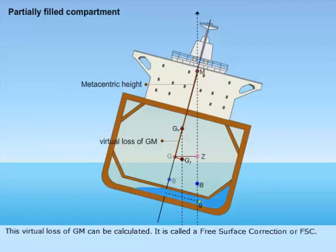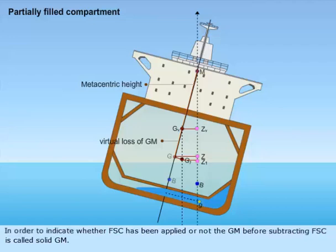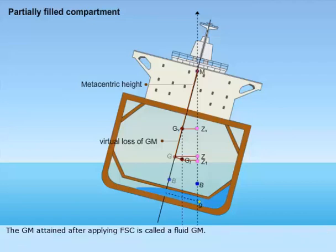This virtual loss of GM can be calculated; it is called a free surface correction, or FSC. In order to indicate whether FSC has been applied or not, the GM before subtracting FSC is called solid GM. The GM attained after applying FSC is called fluid GM. In all stability calculations, you will use fluid GM.